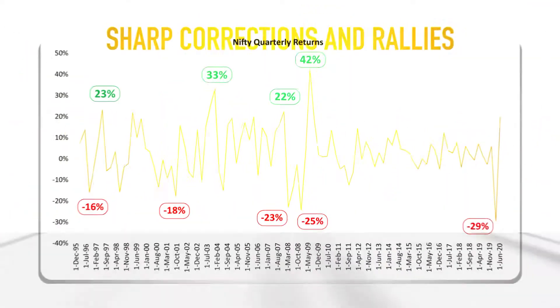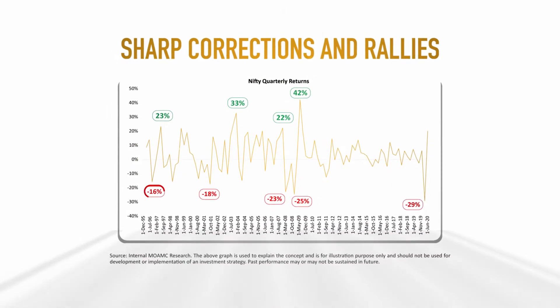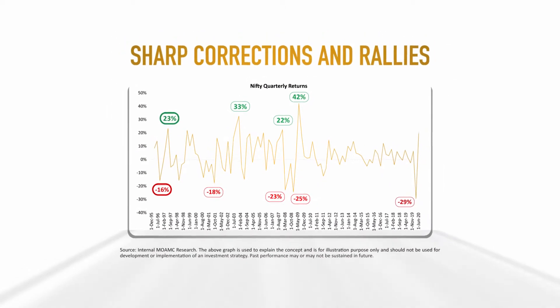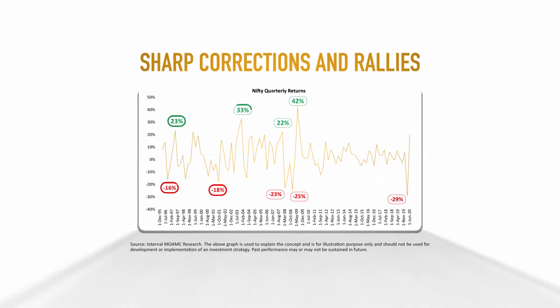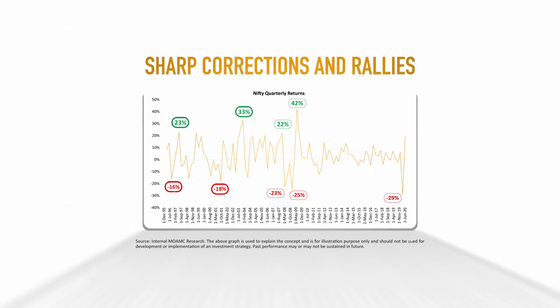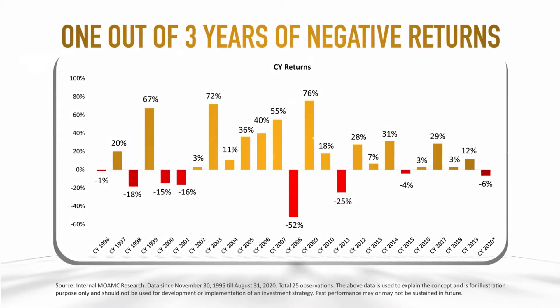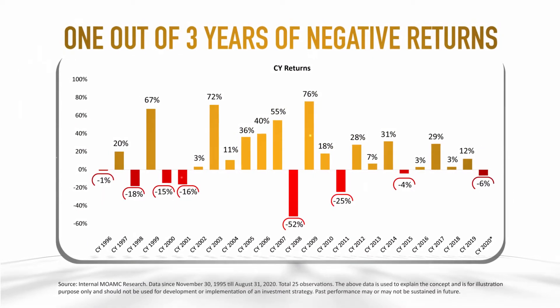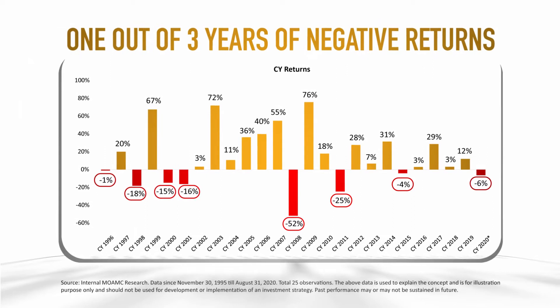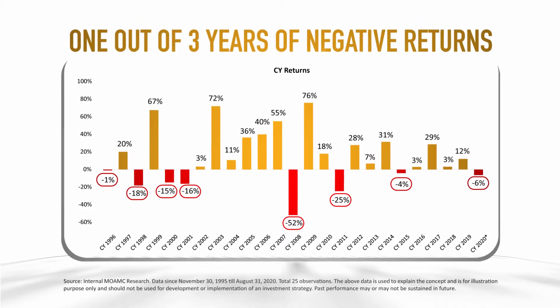Stock markets are like a cardiogram — they keep going up and down. This volatility is sharp, frequent and unpredictable. If you are not alert and quick, a few sharp drawdowns can wipe out accumulated gains.